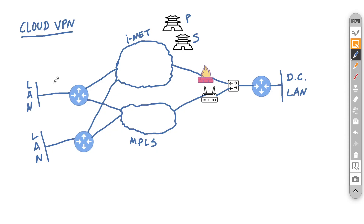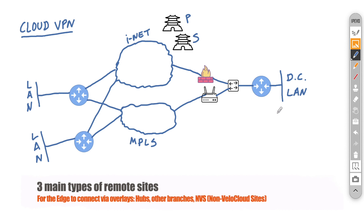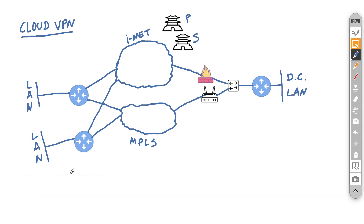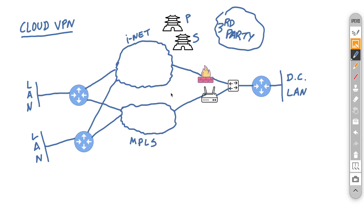There are three different entities that a branch can communicate with. First, it can communicate with data centers where edges are placed — the hubs of a hub-and-spoke topology. Second, it can communicate with other branches. Third, it can communicate with third-party sites, such as older data centers with firewalls or routers, anything supporting IPsec. This also includes cloud security services such as Zscaler, or infrastructure-as-a-service in cases where you don't want to terminate a virtual edge there.